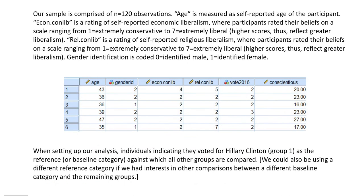Our sample is comprised of 120 observations. Age is measured as self-reported age of the participant. The economic liberalism variable has individuals rating their beliefs on a scale from one being extremely conservative to seven being extremely liberal. We also have a measure of religious liberalism on the same scale, and gender identification, coded zero for identified male and one for identified female.